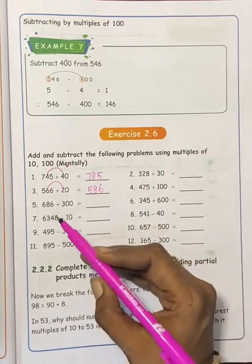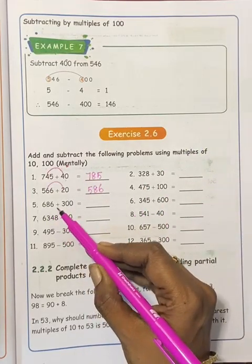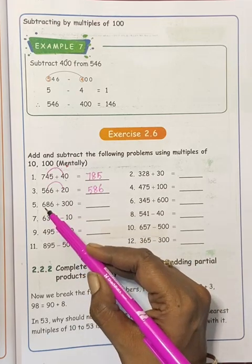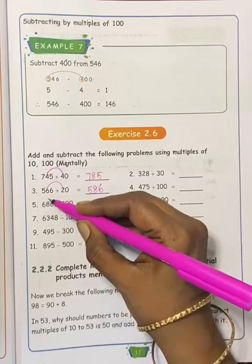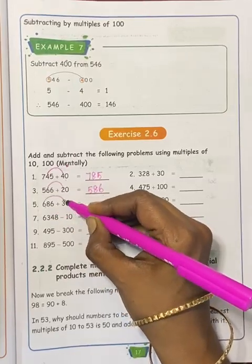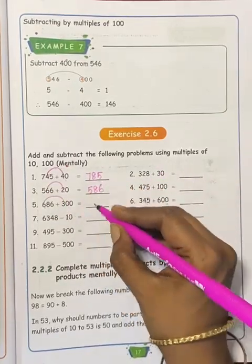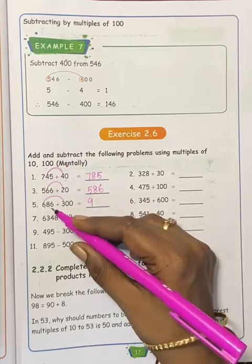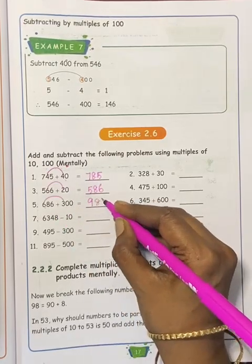Next, 686 plus 300. This is 100s. Then, 100 plus 100. 6 plus 3 is 9. Then 0 is 0. 86 plus 0 is 86. That is the number.